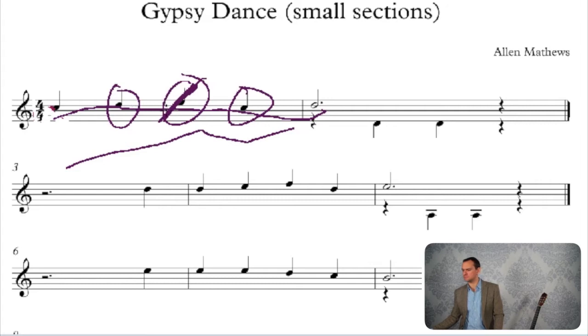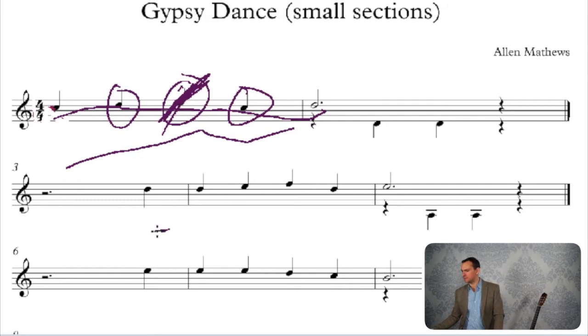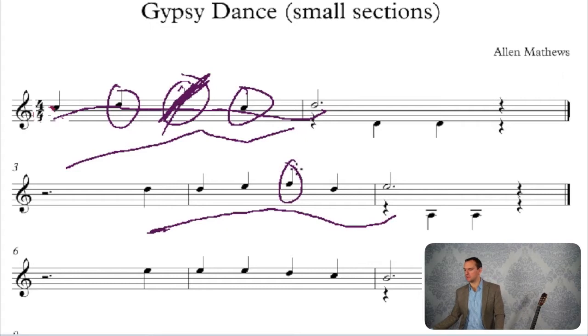That high note is just more quiet than either neighboring note. You can look at the next line — it goes up and back down in that same S-curve, and the high note there is also one you don't want to accent. It's difficult because on the guitar the high notes naturally want to pop out, but you have to practice extreme control to prevent that from happening.